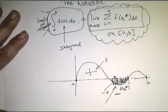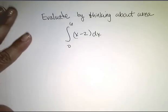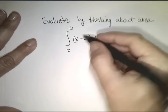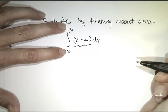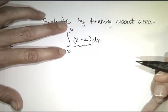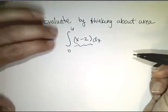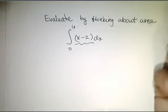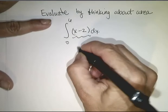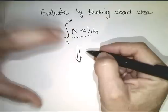Let's now see if we can start with an integral. So, here's my integral right here. Remember, this right here is my integrand, and zero and six are my limits of integration. Zero being my lower limit, and six being my upper limit. Let's see if we can evaluate this integral by thinking about it in terms of area.